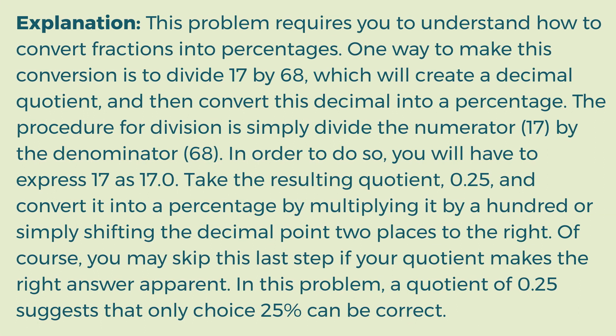Explanation. This problem requires you to understand how to convert fractions into percentages. One way to make this conversion is to divide 17 by 68, which will create a decimal quotient, and then convert this decimal into a percentage. The procedure for division is simply divide the numerator 17 by the denominator 68. You will have to express 17 as 17.0.